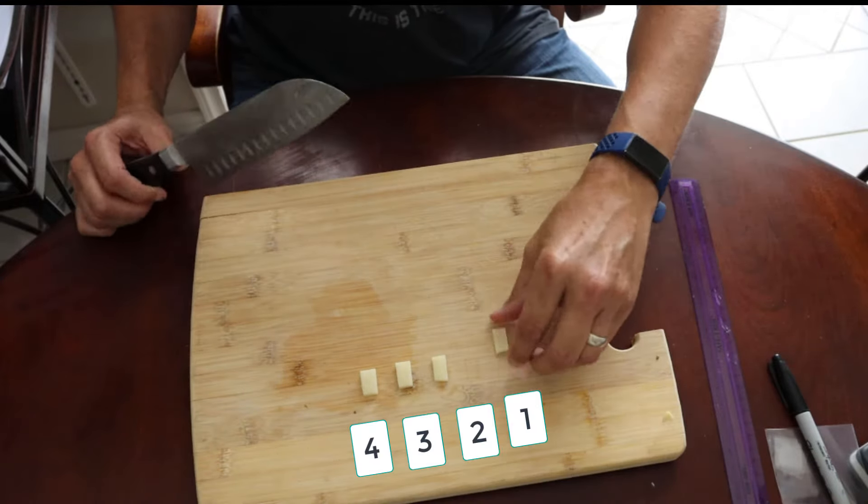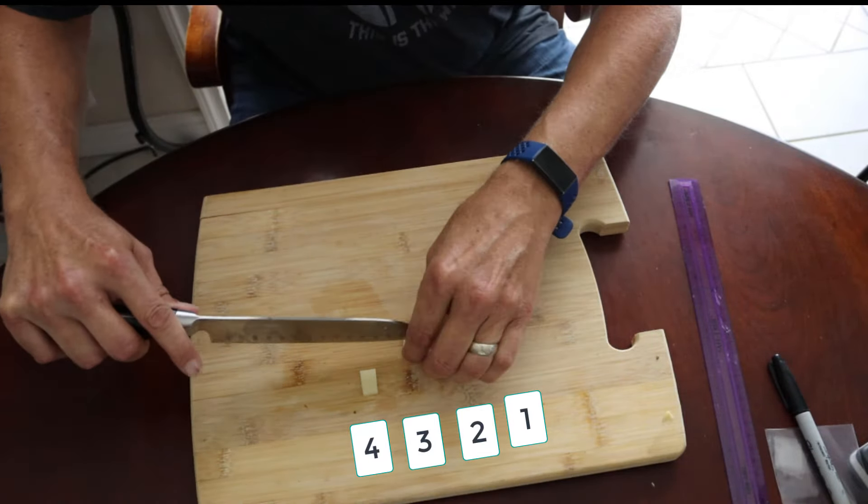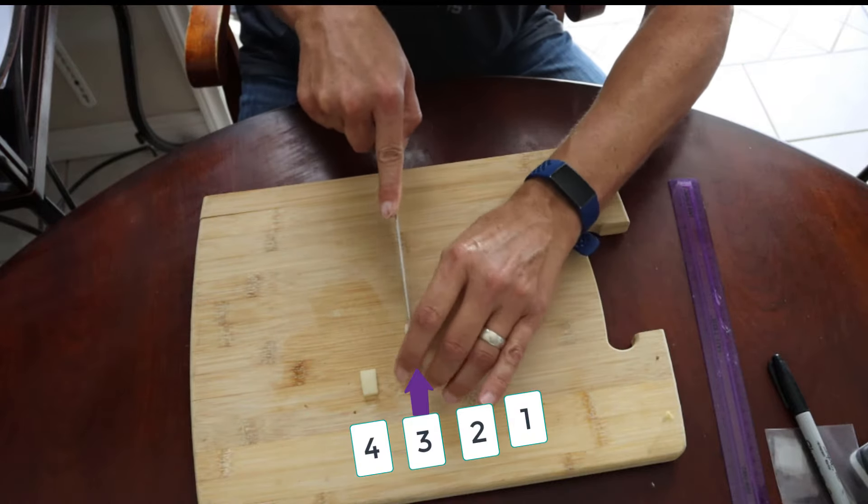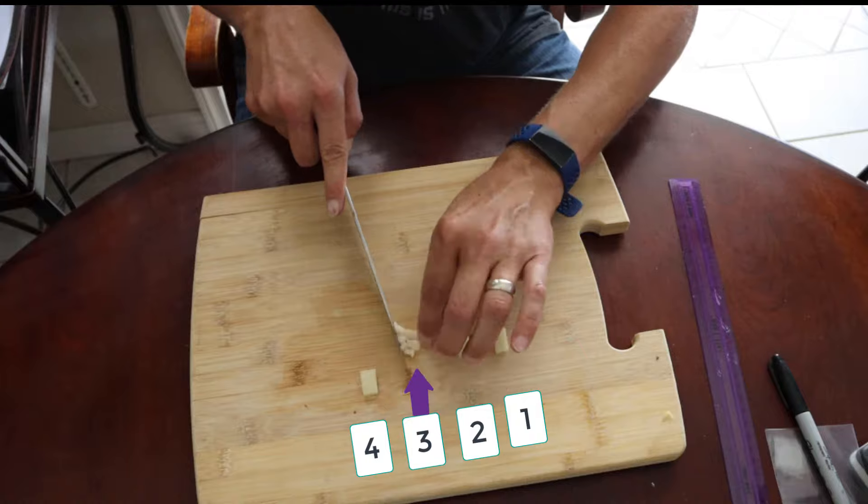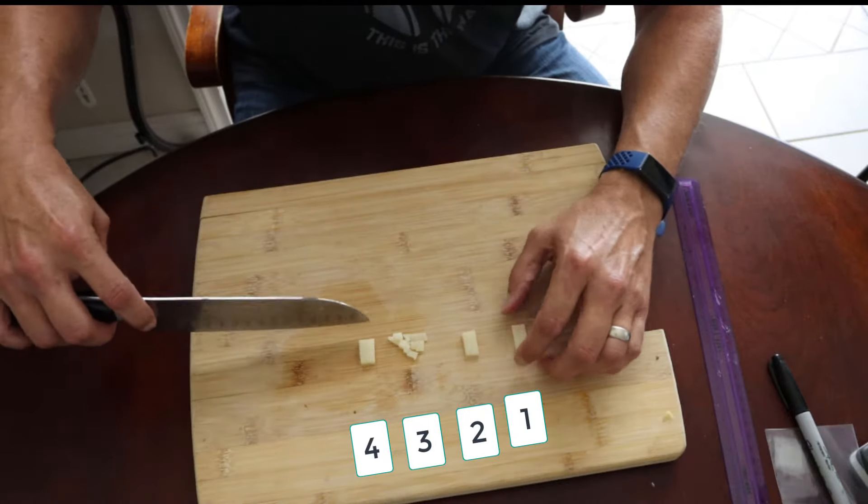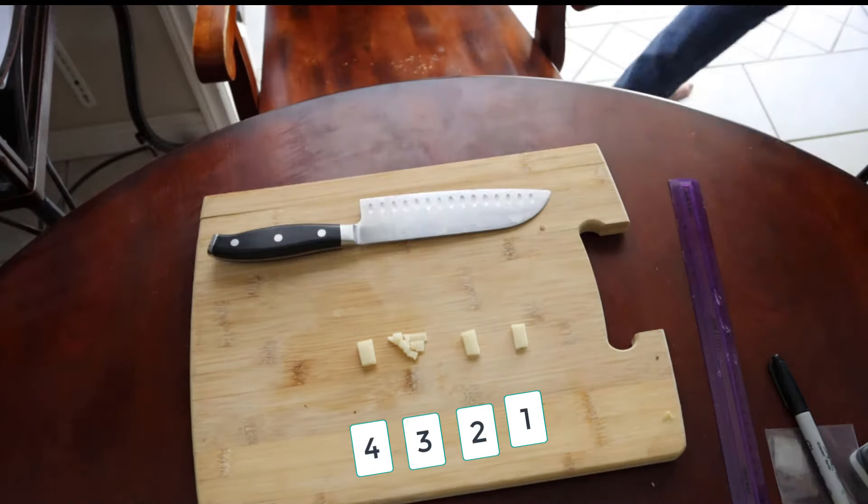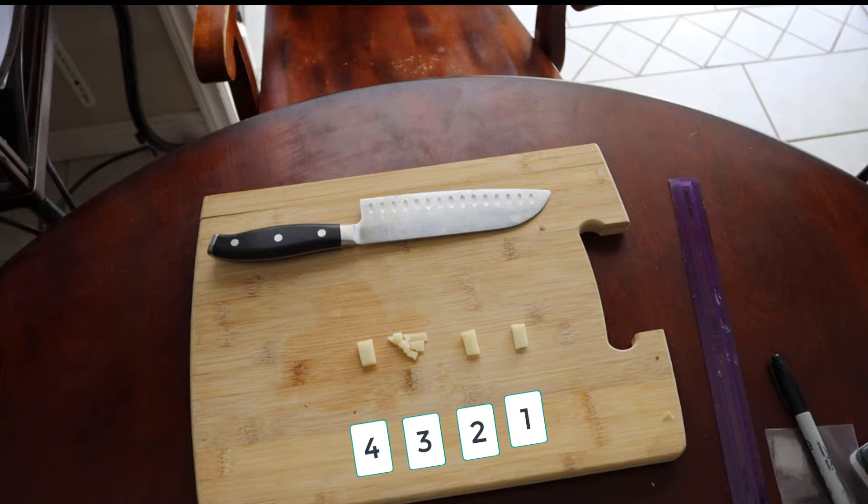Potato three we're going to cut up into small tiny chunks as you see there. The goal of what we're doing is we are creating the same amount of potato as the others, but this one will have a much higher surface area because of cutting up the potato.